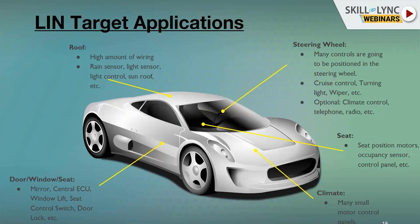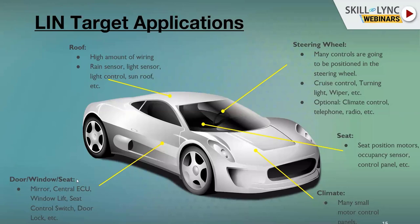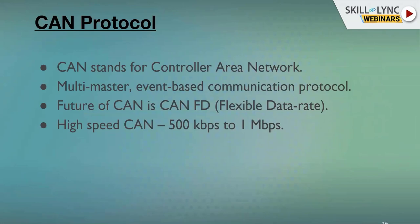LIN is local, meaning it sits at the end of the network. Think of local shops near you versus a large mall serving many towns. LIN target applications are similarly local and task-specific: door, window, and seat ECUs are implemented using LIN protocol, as well as climate control, steering wheel, and roof — these are the applications where LIN is used.